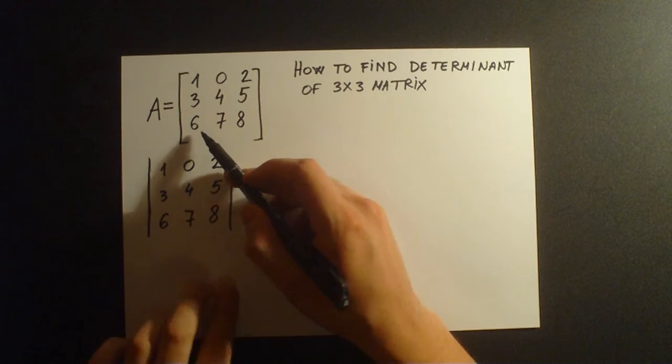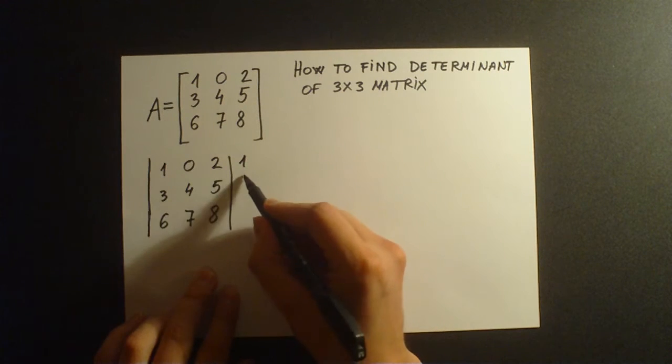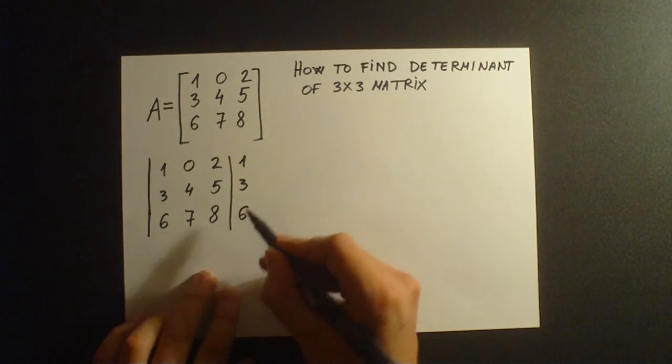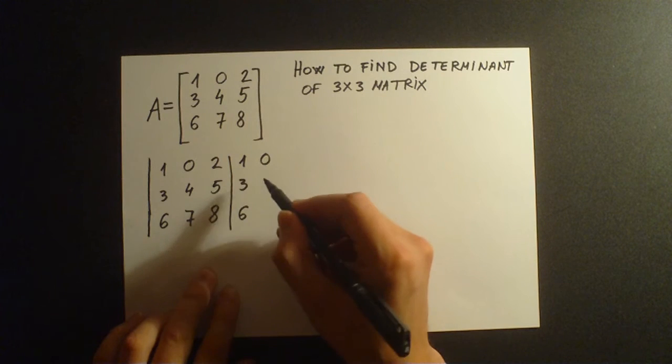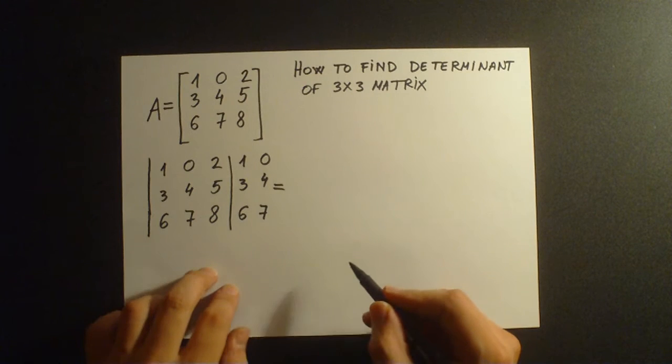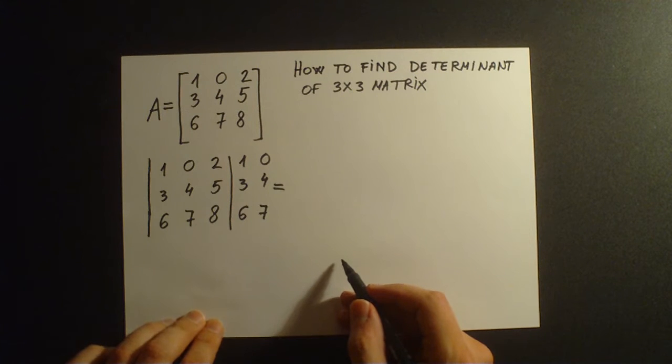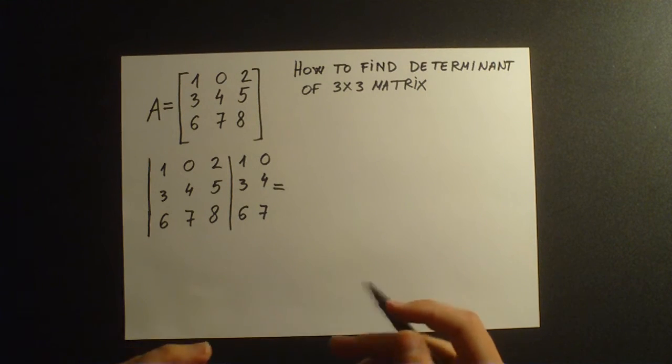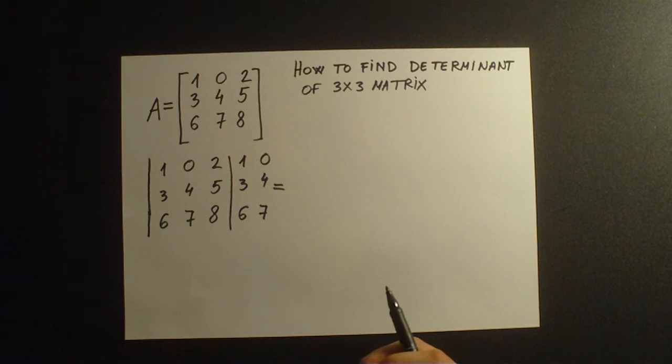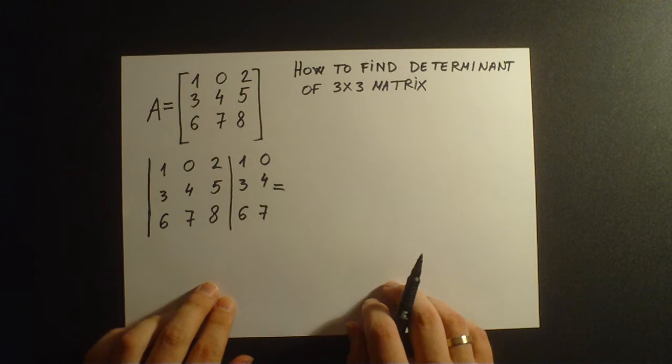We're going to write the elements of the first column: 1, 3, 6, and elements of the second column: 0, 4, 7. Now we're going to compute the determinant of this matrix. We'll calculate it by multiplying diagonals and subtracting the products of diagonals from the other side.